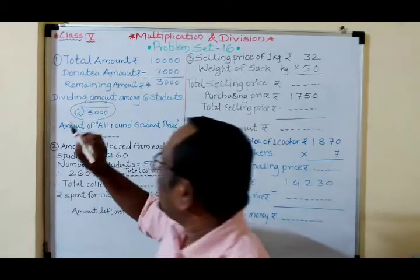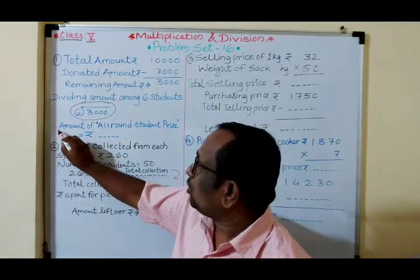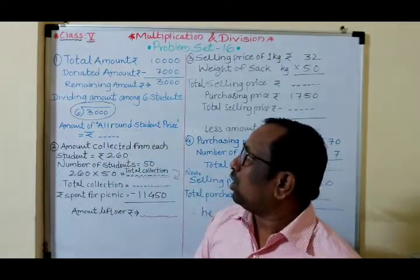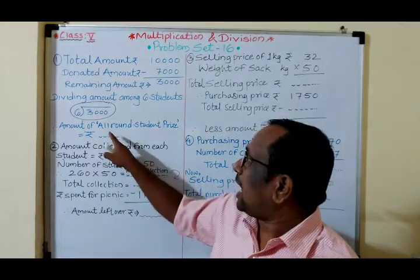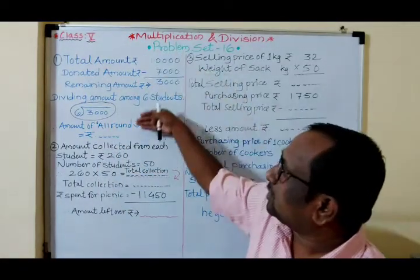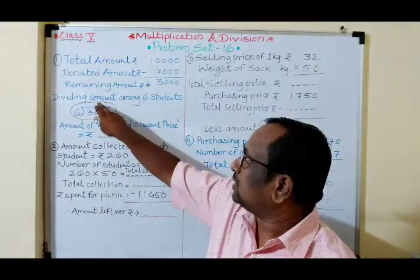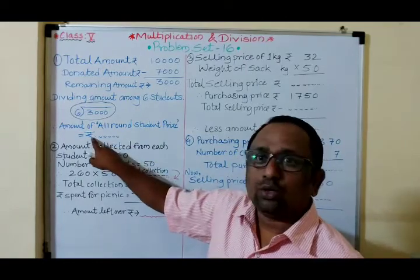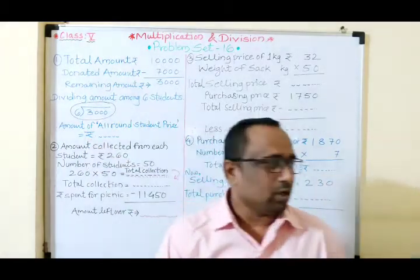At the end, write: 'Therefore, the amount of the all-round student prize is ₹___.' When you solve the division 3,000 ÷ 6, you will get the prize amount per student. Do the division properly. Whatever answer you get, write it as the amount of the all-round student prize in rupees. Don't write RS — write the rupee symbol and make it a habit.